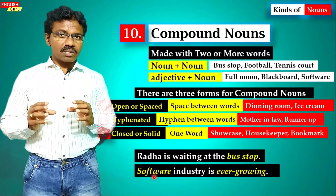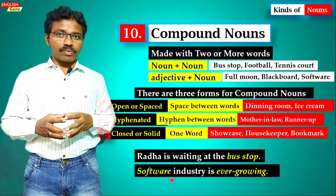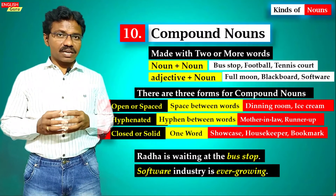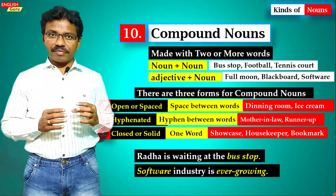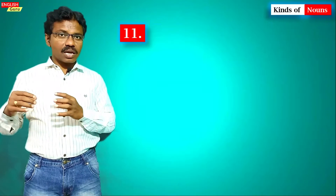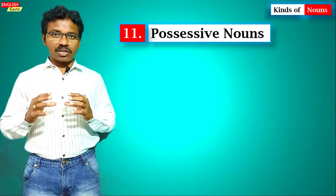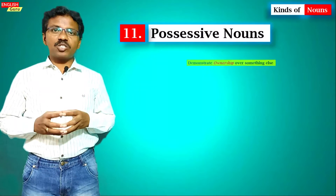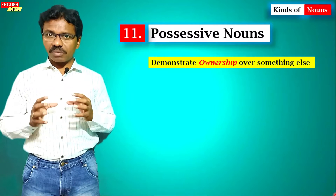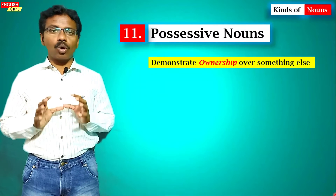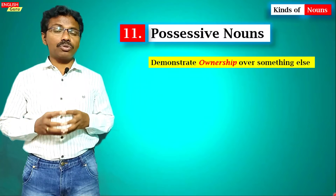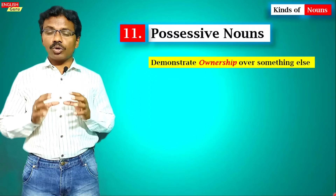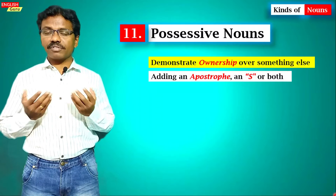'Rada is waiting at the bus stop' — 'bus stop' is a compound noun. 'Software industry is ever growing' — 'software' is a compound noun. The next kind is possessive nouns — possession means having ownership. Possessive nouns demonstrate the ownership of something by adding an apostrophe, an 's,' or both.